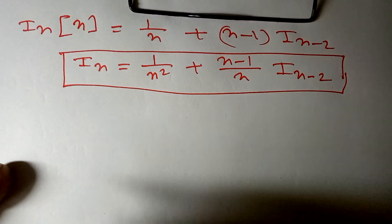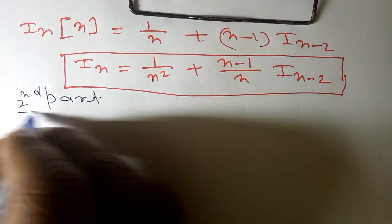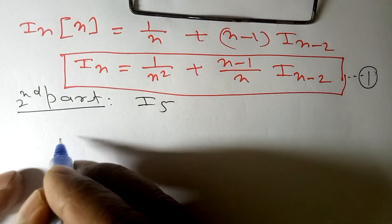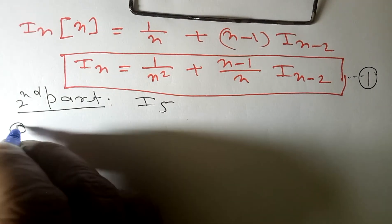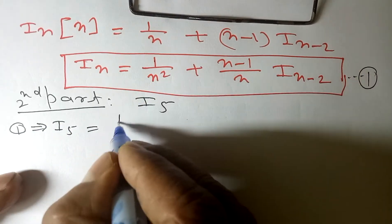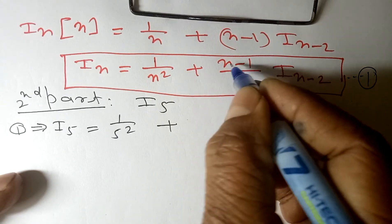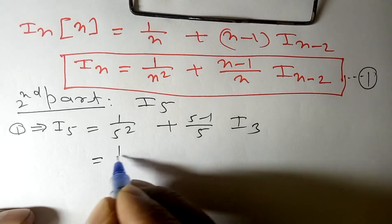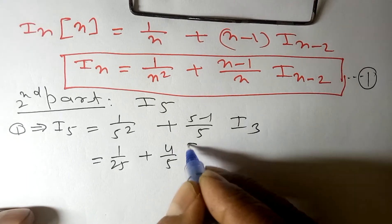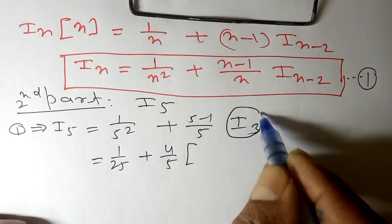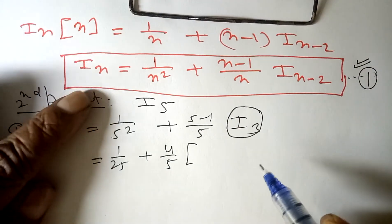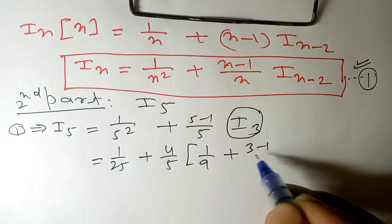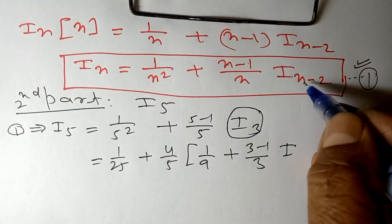Now we do the second part: evaluate I5. Put n = 5 in the reduction formula (equation 1): I5 = 1/5² + (5-1)/5 · I3 = 1/25 + 4/5 · I3. For I3, use the formula again: I3 = 1/9 + (2/3)·I1.